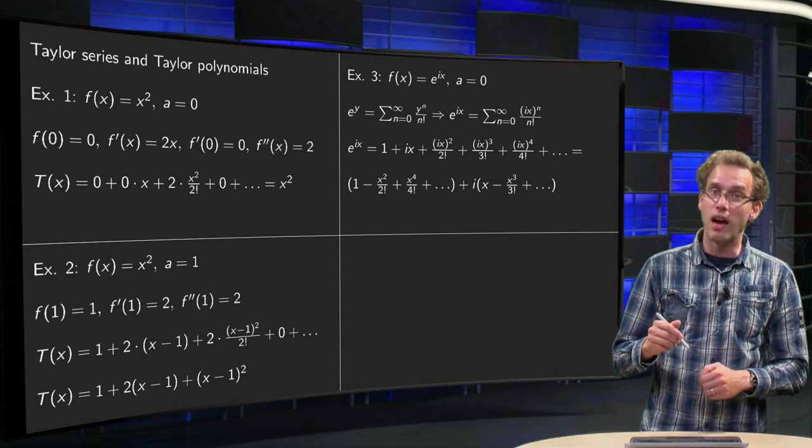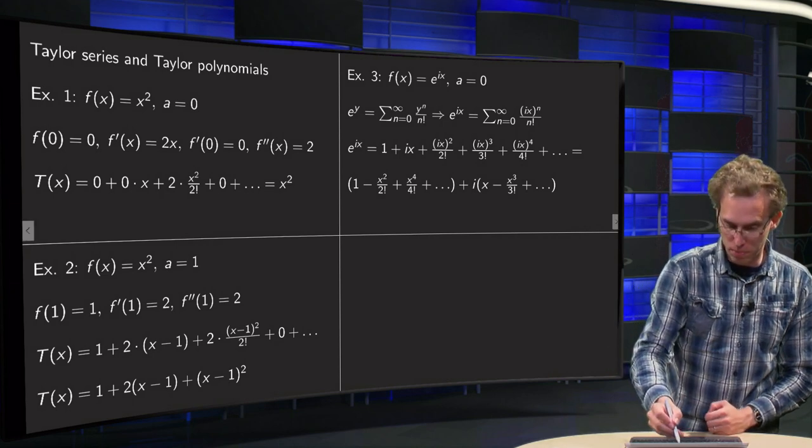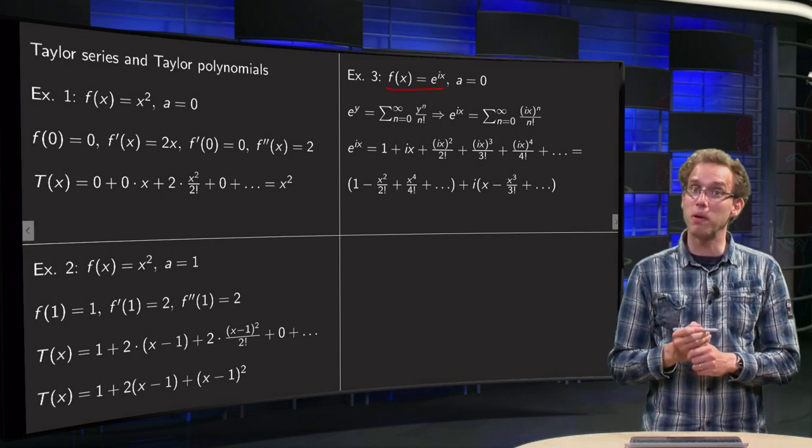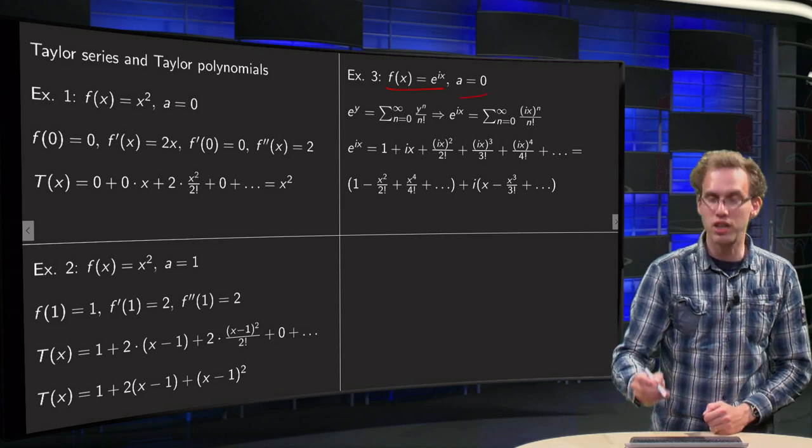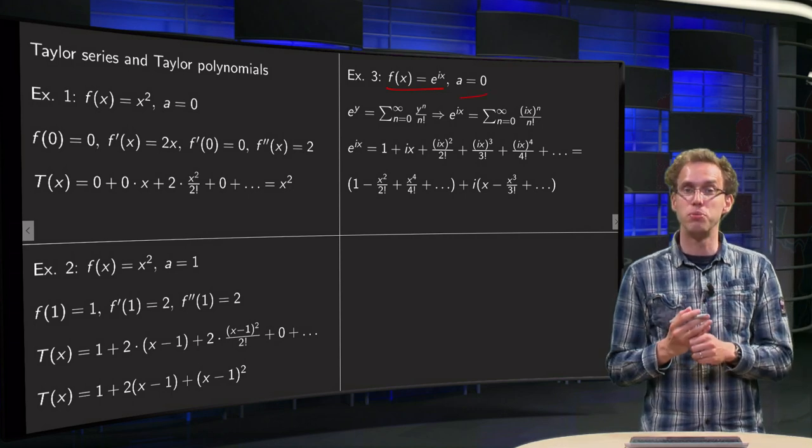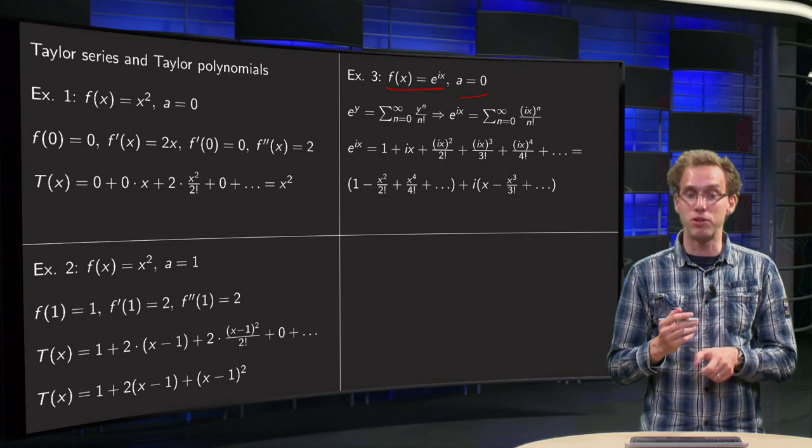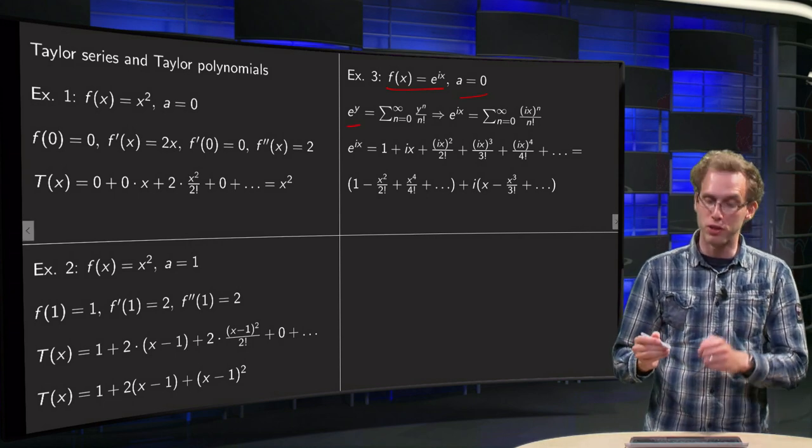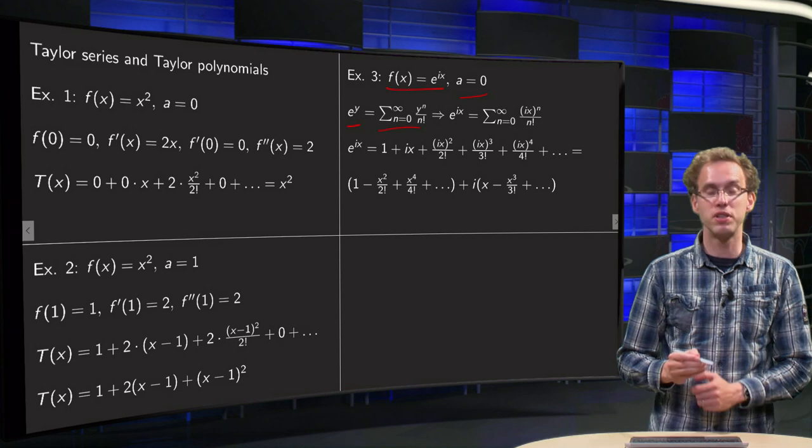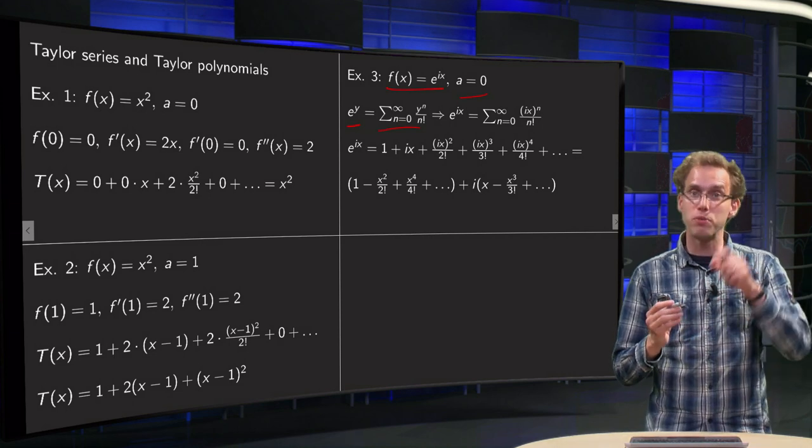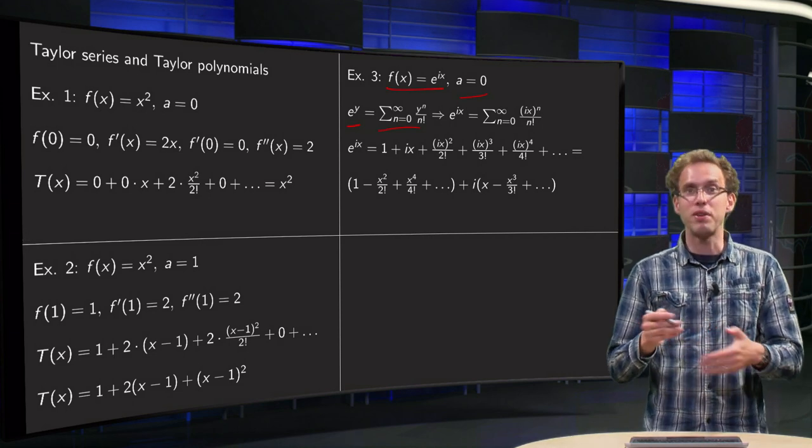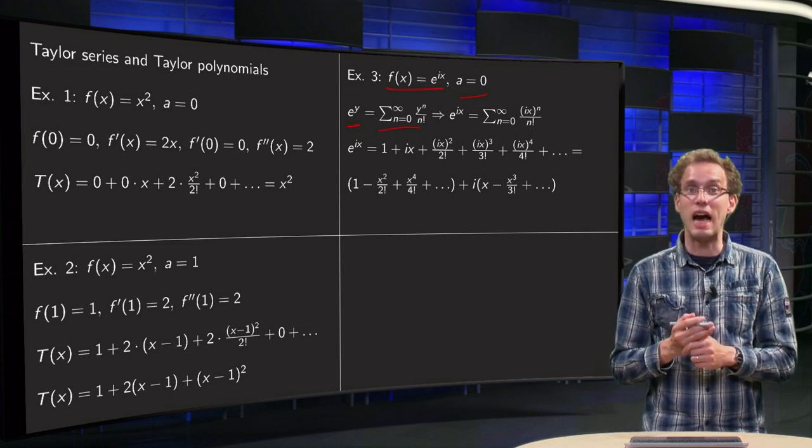Next example, let's see what happens if we compute the Taylor series of e^(ix) around a = 0. So what happens if we substitute ix in the power series of e^y? Well, we know e^y = Σ(n=0 to ∞) y^n/n!, and what happens if you just try to plug in ix?